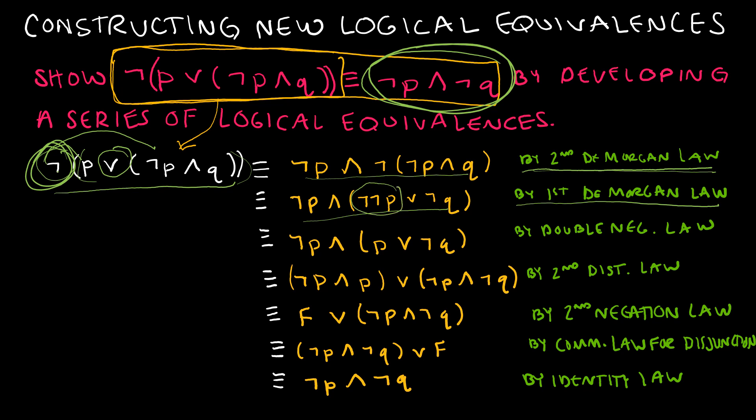Now I'm looking at the fact that I have a NOT NOT P. So I'm just changing it to a P by the double negation law. And then I'm looking at, I've got NOT P AND and then I've got a compound proposition. And so I'm going to distribute that NOT P by the second distributive law. So I'm taking NOT P AND P or NOT P AND NOT Q.